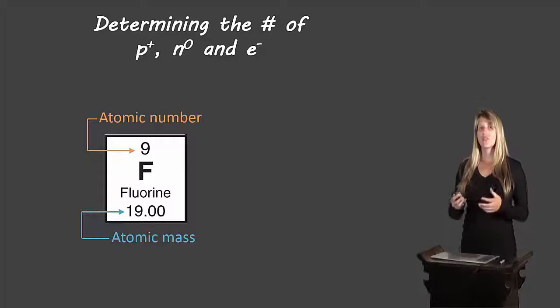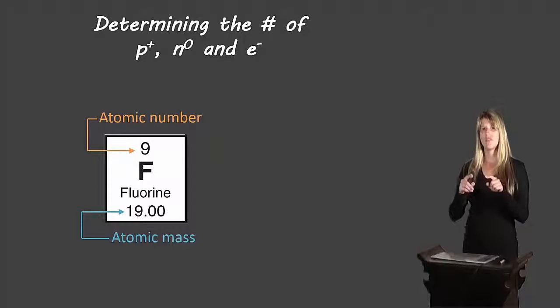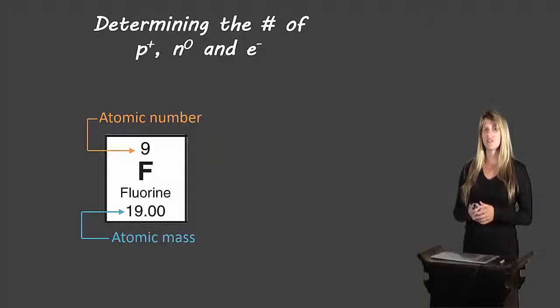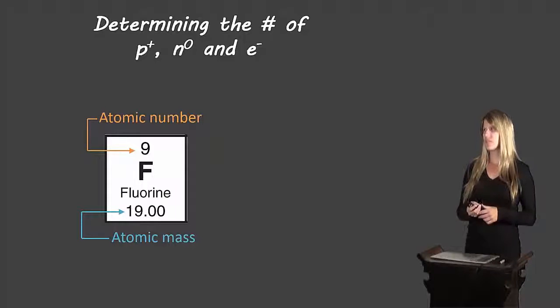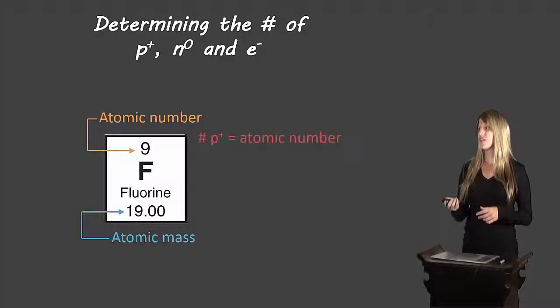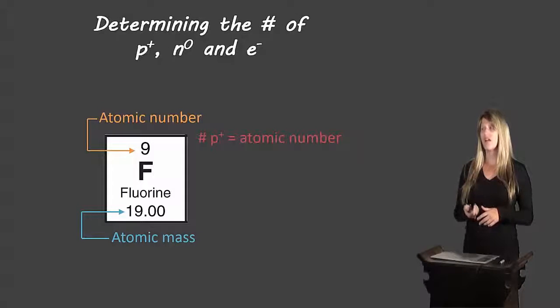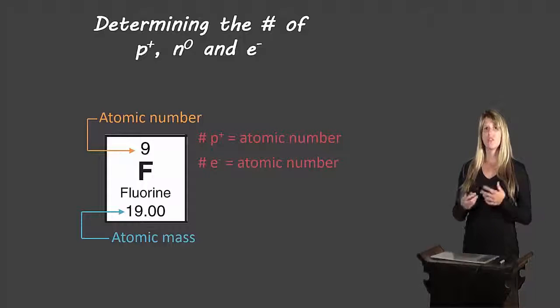So we'll start off with just describing what we see in the individual boxes on the periodic table. There'll usually be two numbers. One is the atomic number, which is a whole number, which means no decimals, and the other is the atomic mass, which usually has decimals. It's the bigger number. The atomic number tells us how many protons there are and how many electrons there are. So in the case of fluorine, with an atomic number of nine, it has nine protons and it has nine electrons.